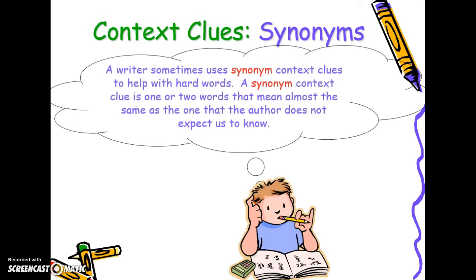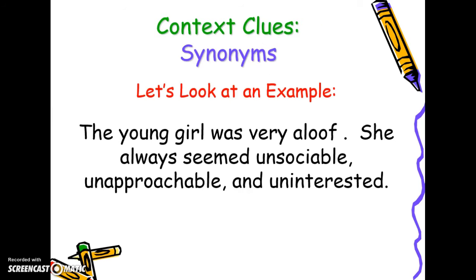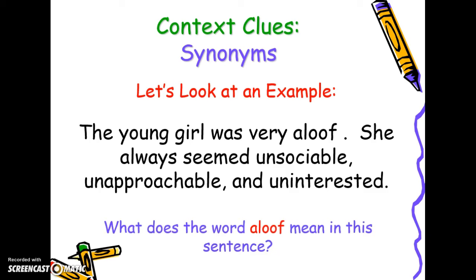Sometimes authors use synonyms. A writer might use a synonym as a context clue — it's one or two words that mean almost or exactly the same thing. Let's look at an example: 'The young girl was very aloof. She always seemed unsociable, unapproachable, or uninterested.' What does the word aloof mean in this sentence?